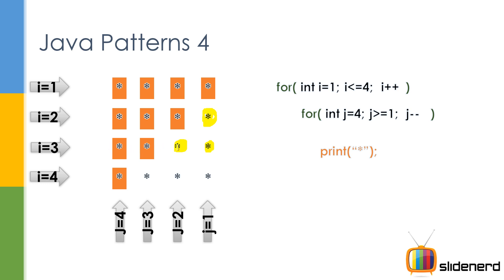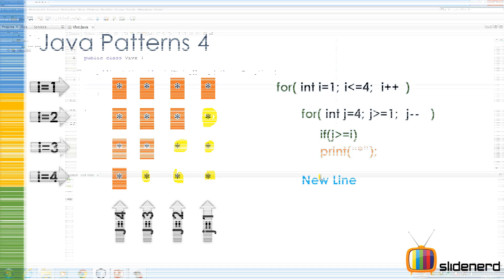Whenever j becomes smaller than i, we don't print anything. When i was 4, j became smaller and smaller — we don't print anything at all. That's the condition: we print only if j is bigger than or equal to i. If j is smaller than i we don't print anything — j has to be bigger than i for a star to be printed. It's a pretty simple program.